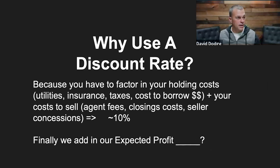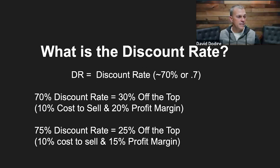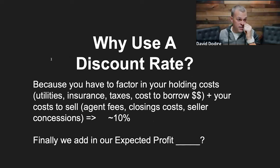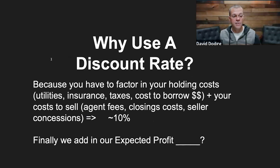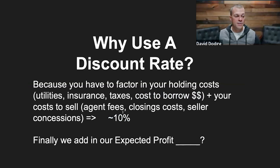Why do we multiply the ARV by a discount rate? Because you have to factor in holding costs — utilities, insurance, taxes, cost to borrow money — plus your cost to sell, which includes agent fees, closing costs, and seller concessions. All of these costs to do the deal are typically going to be about 10%. That's the cost to sell a property.